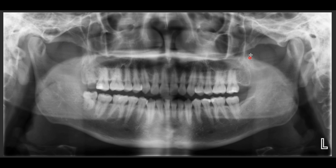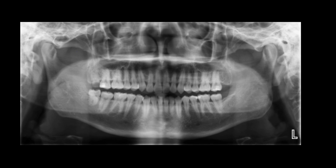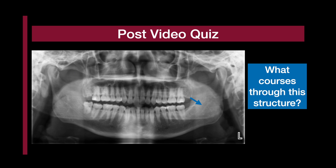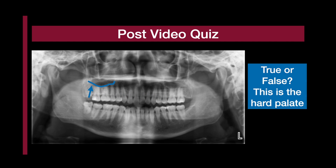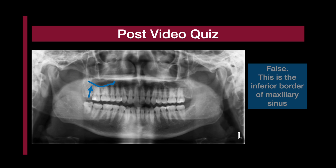Lastly, look at the soft tissues — occasionally, calcified lymph nodes in the submandibular or submental regions may pop up. Here is a post-test: what courses through this structure here? The answer is the inferior alveolar nerve. True or false — this is the hard palate? False. This is the inferior border of the maxillary sinus.